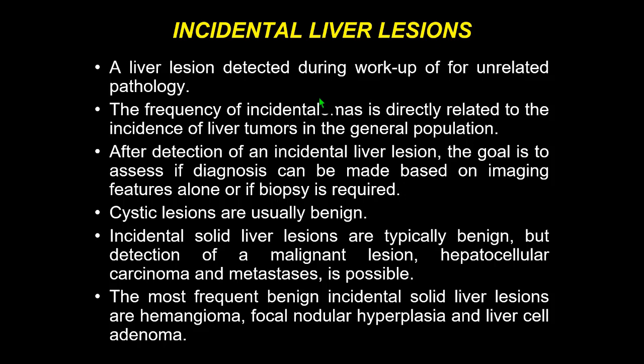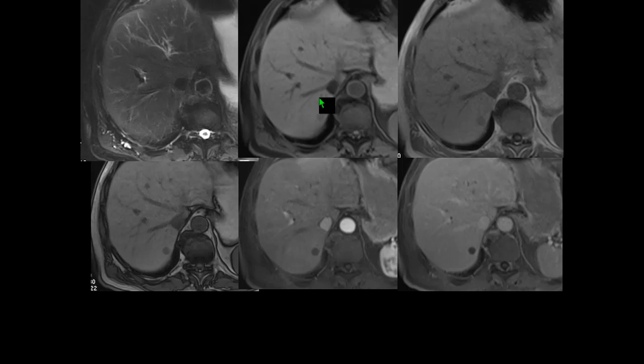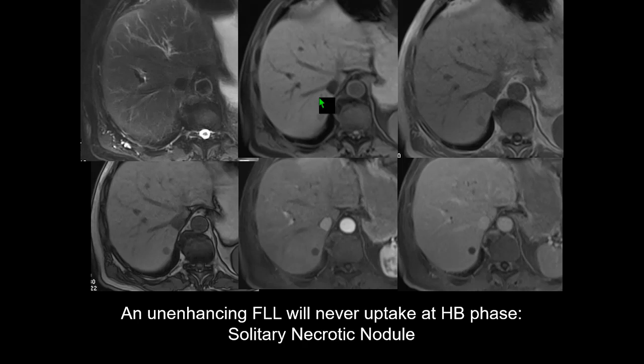Remember that even in oncological patients with a history of tumor, most small lesions are benign. When we have a non-enhancing nodule, we don't really need hepatobiliary phase imaging — if a lesion doesn't take contrast during dynamic imaging, it will never take it in the hepatobiliary phase. We can already characterize it: subcapsular, hypointense on T2, non-enhancing — likely a solitary necrotic nodule — and we don't need liver-specific contrast agents.